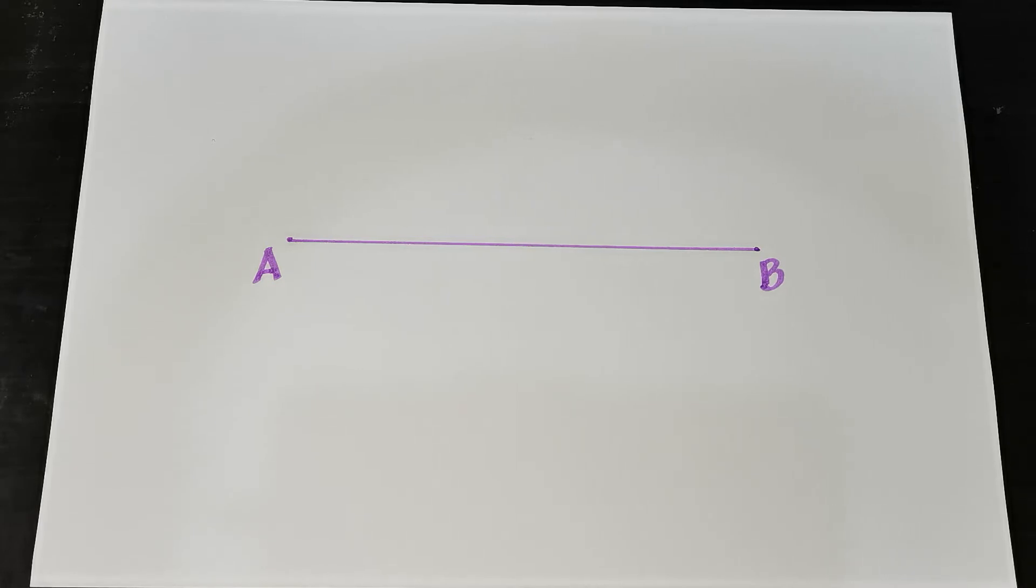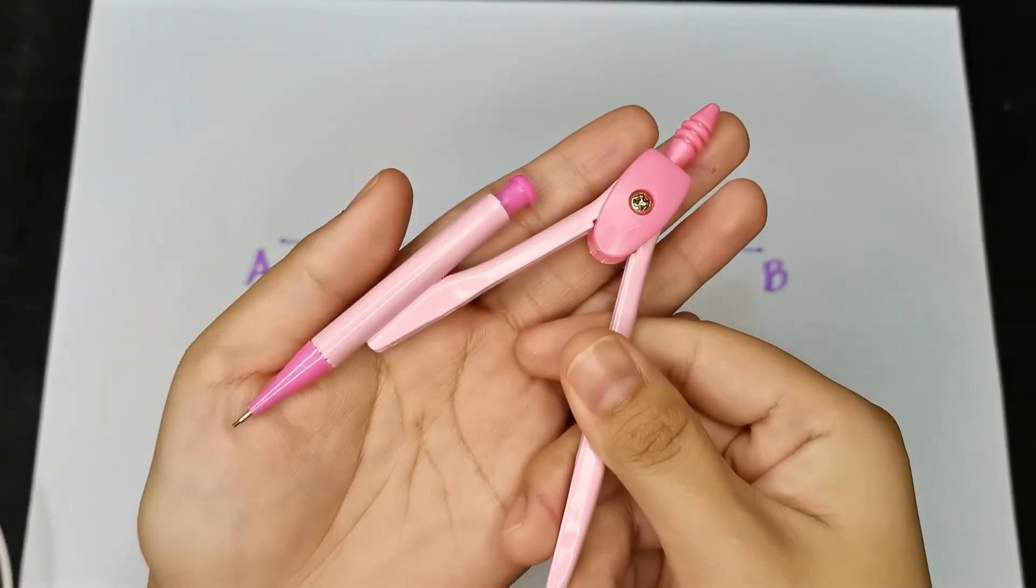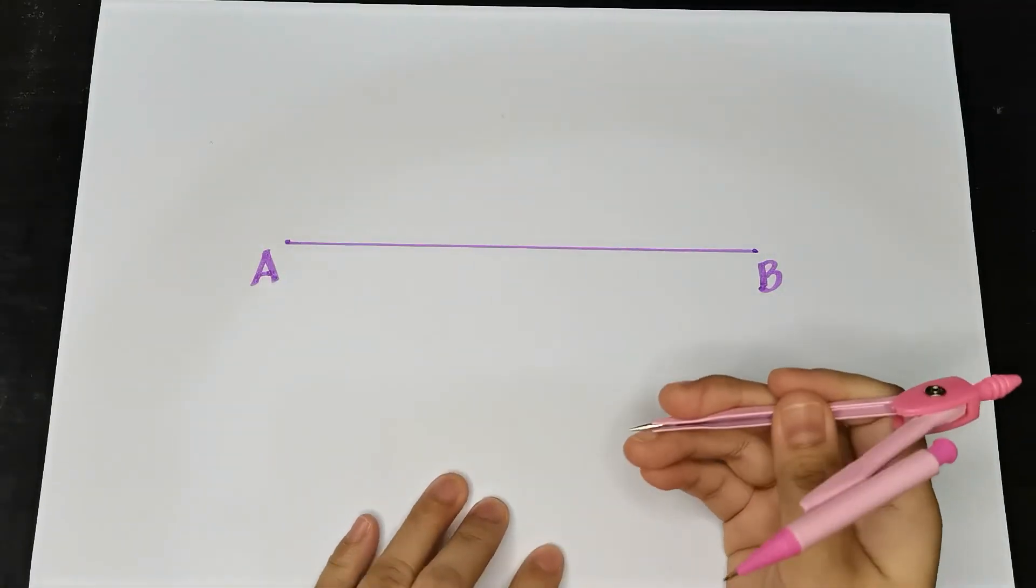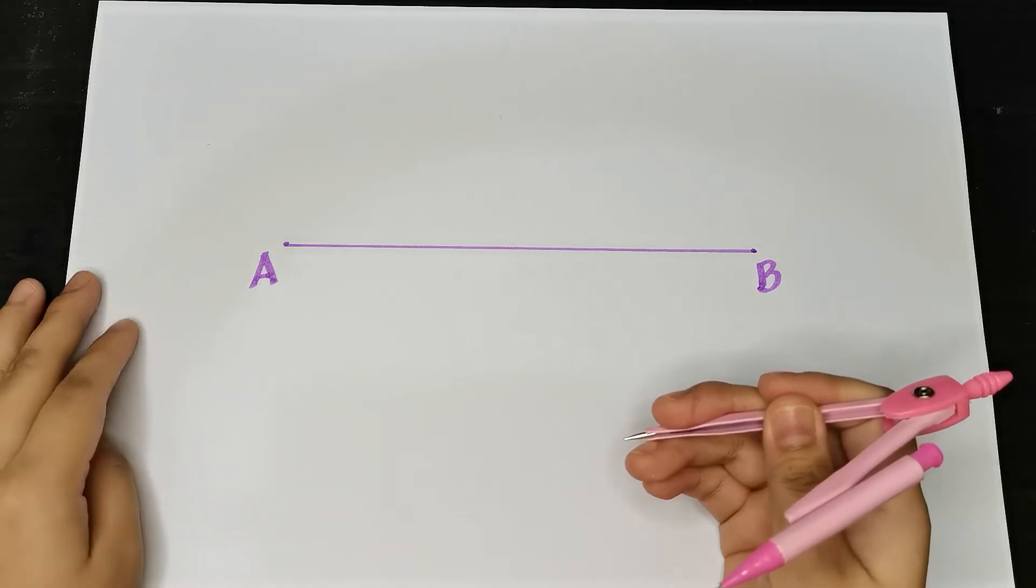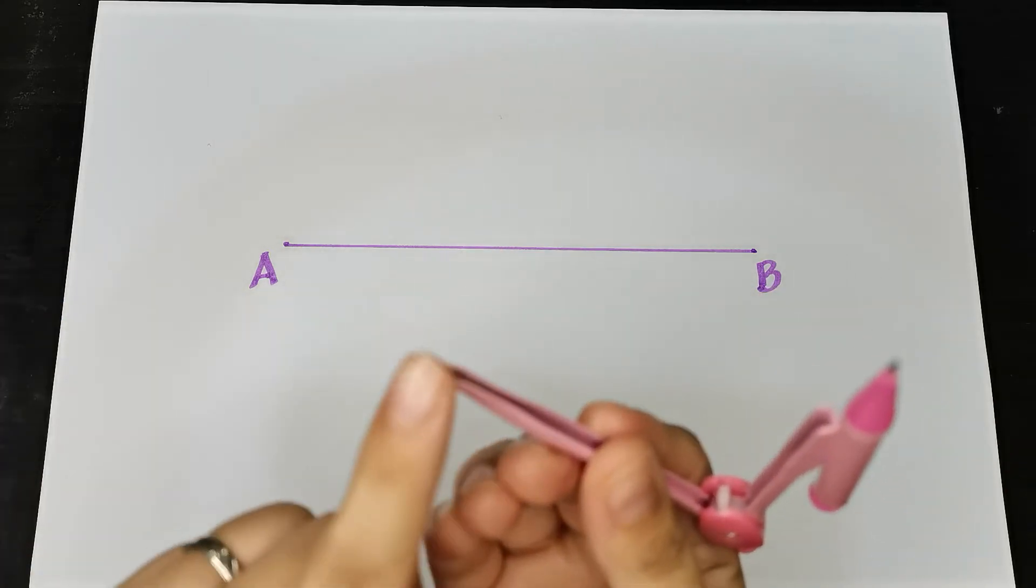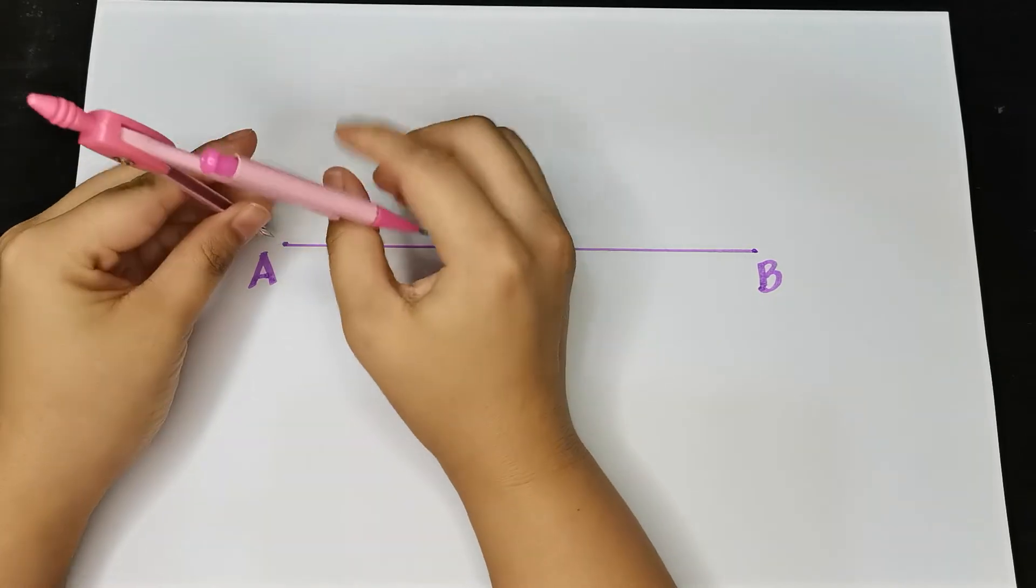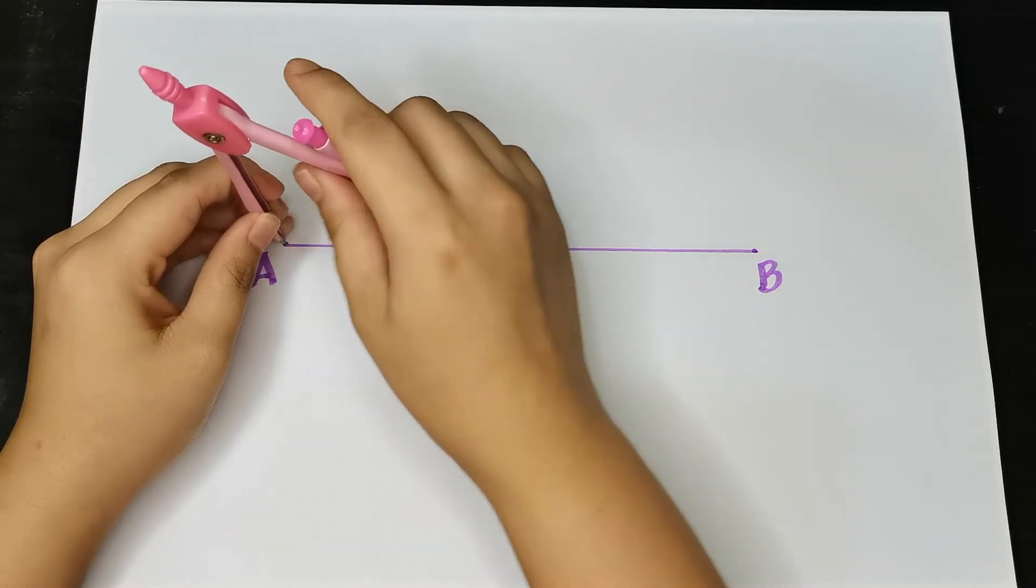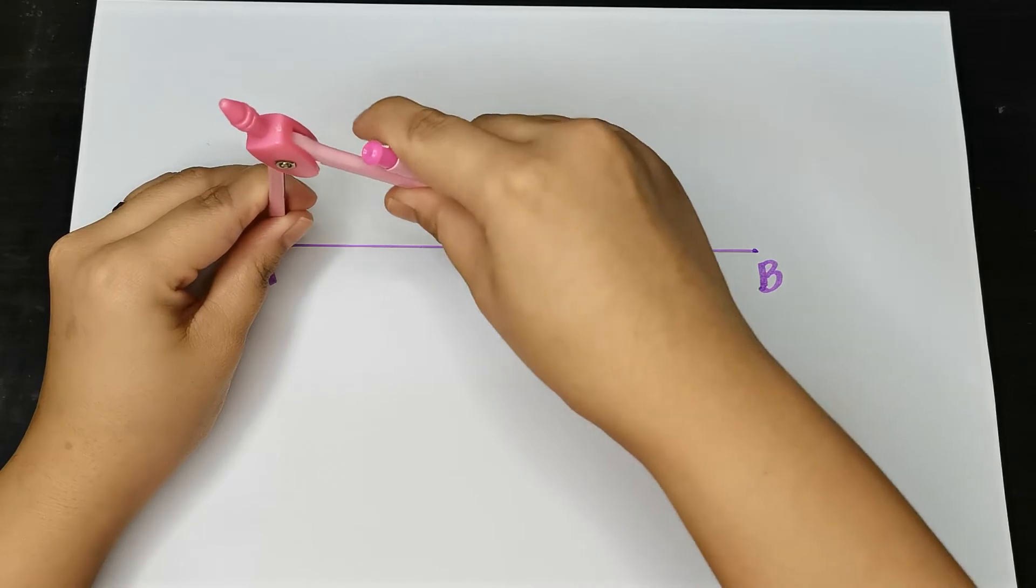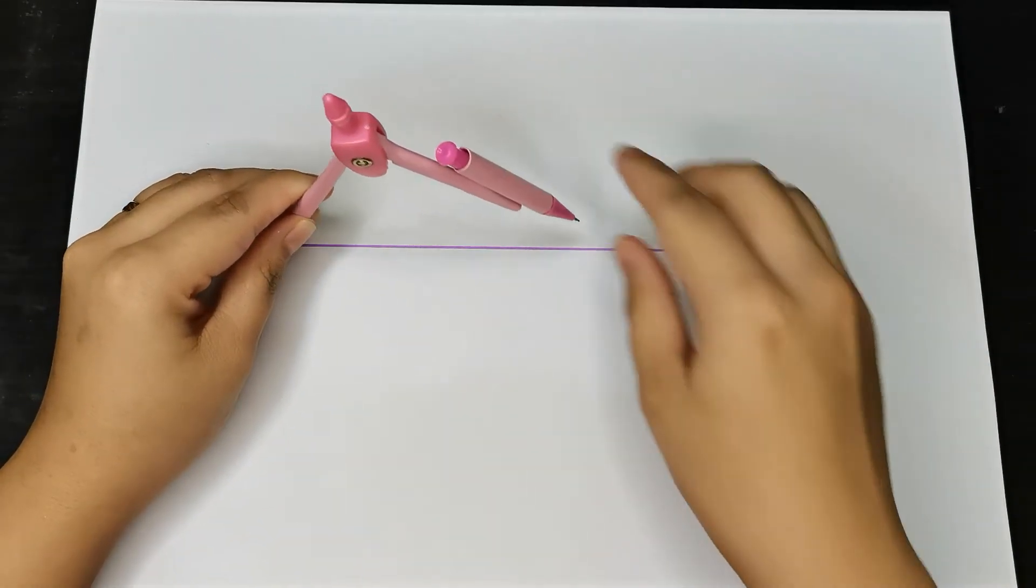We're going to bisect line segment AB, meaning we're going to divide it into two congruent or equal parts. Here are the steps. Step one: place your compass on point A. Place the sharp point on point A.